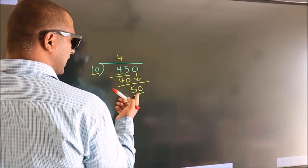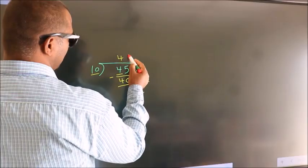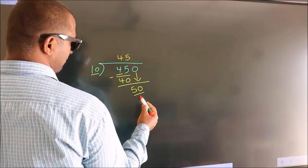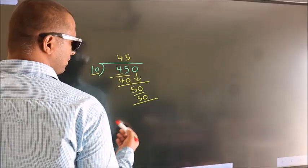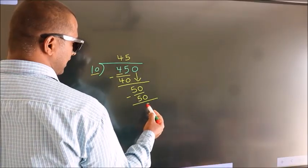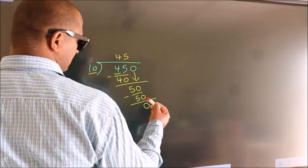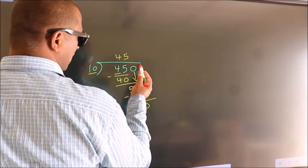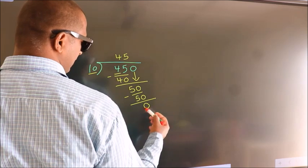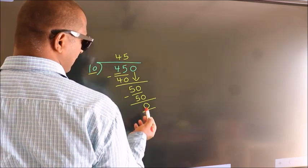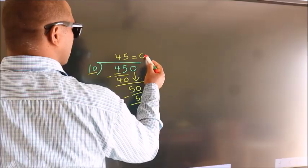When do we get 50 in the 10 table? 10 fives, 50. Now we subtract. We get 0. After this, no more numbers to bring down and we got remainder 0. So this is our quotient.